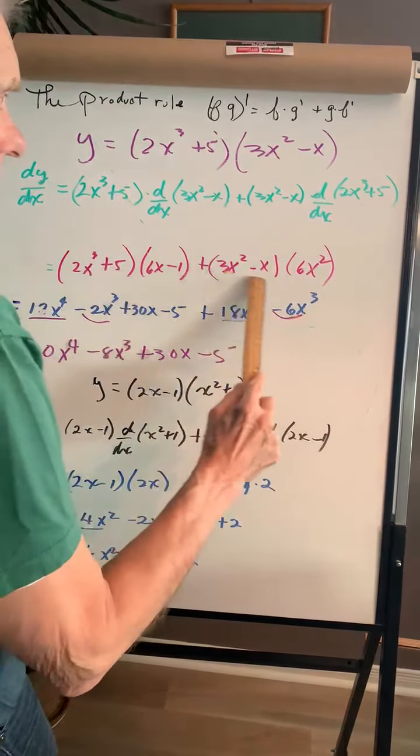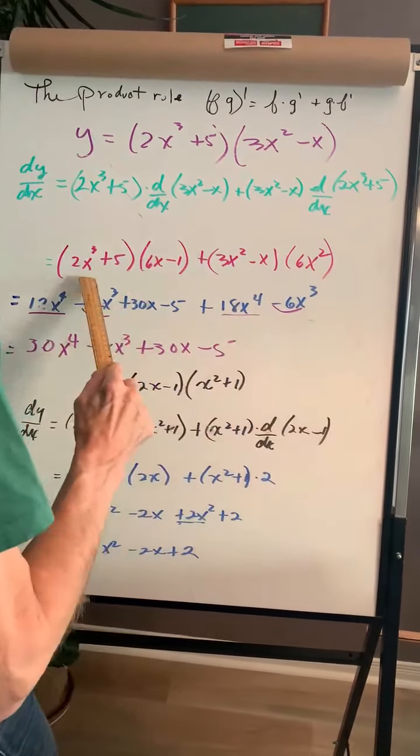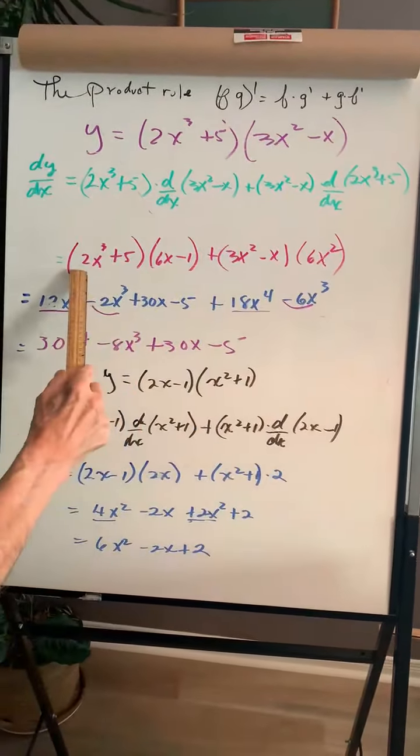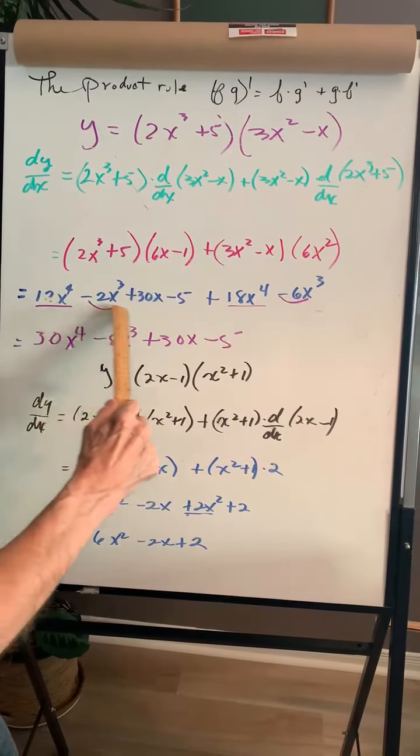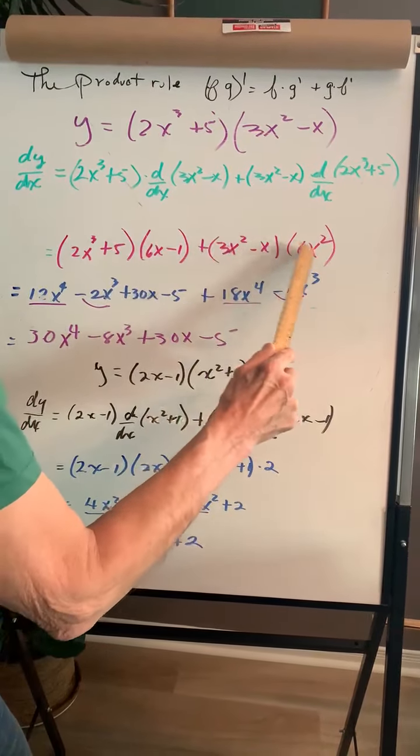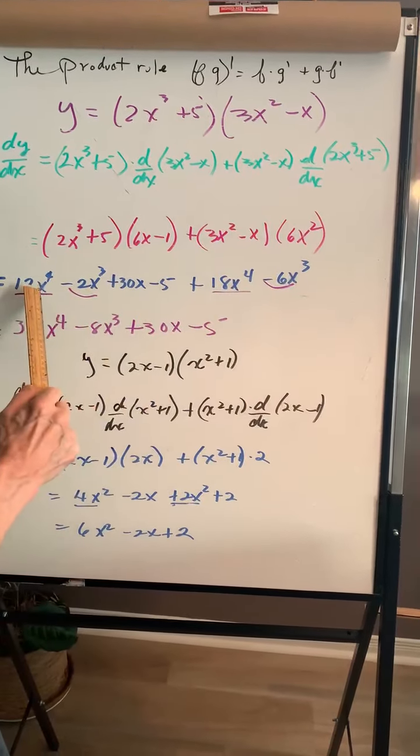Leave it alone, 6x squared, expand. The foil of this will give me this. Expand this times this and this times this. Here it is, collect like terms.